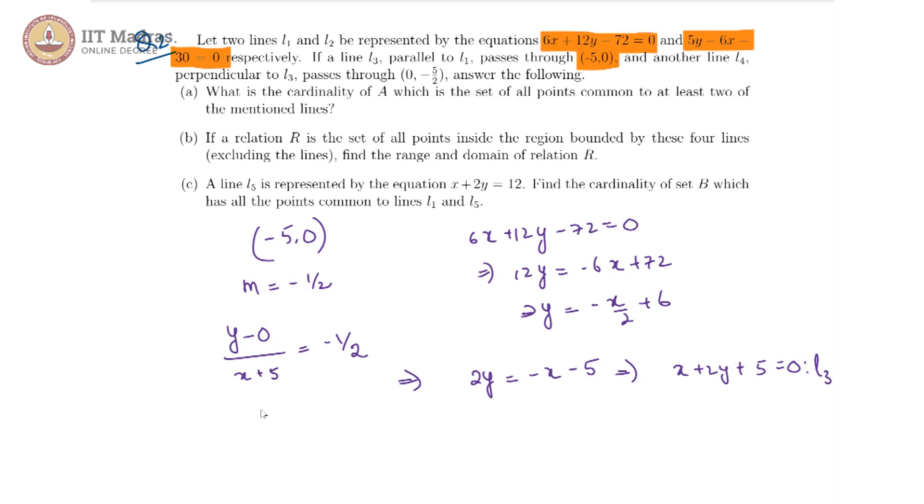Now if we looked further, we have line L4 which is passing through this point and it is perpendicular to L3. If we took this to be m1 = -1/2 = m3, and let us consider the slope of L4 to be m4. We can say m3 × m4 = -1 because they are perpendicular. That would indicate m4 = -1/m3 which is basically 2. So we now have the slope of L4.